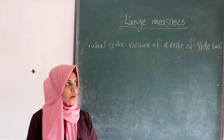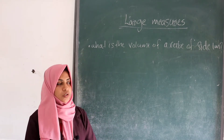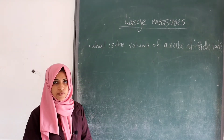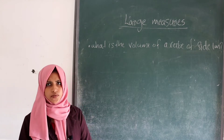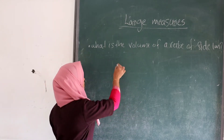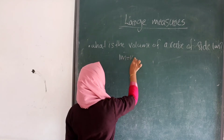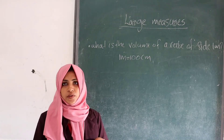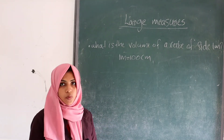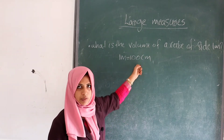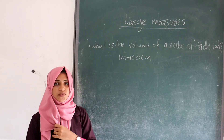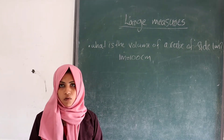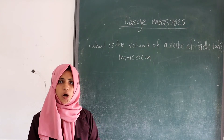Today we are going to learn a new topic: large measures. Look at the question — what is the volume of a cube of size 1 meter? So, 1 meter is 100 centimeters. We must calculate the volume of a cube of size 100 centimeters.